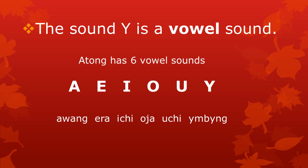Atong has 6 vowels: A as in Awang, E as in Era, I as in Ichi, O as in Oja, U as in Uchi, and Ö as in Ömbeng. As we can see, we can write each of these vowel sounds with a different letter of the Atong alphabet, namely the letters A, E, I, O, U, and Ö.